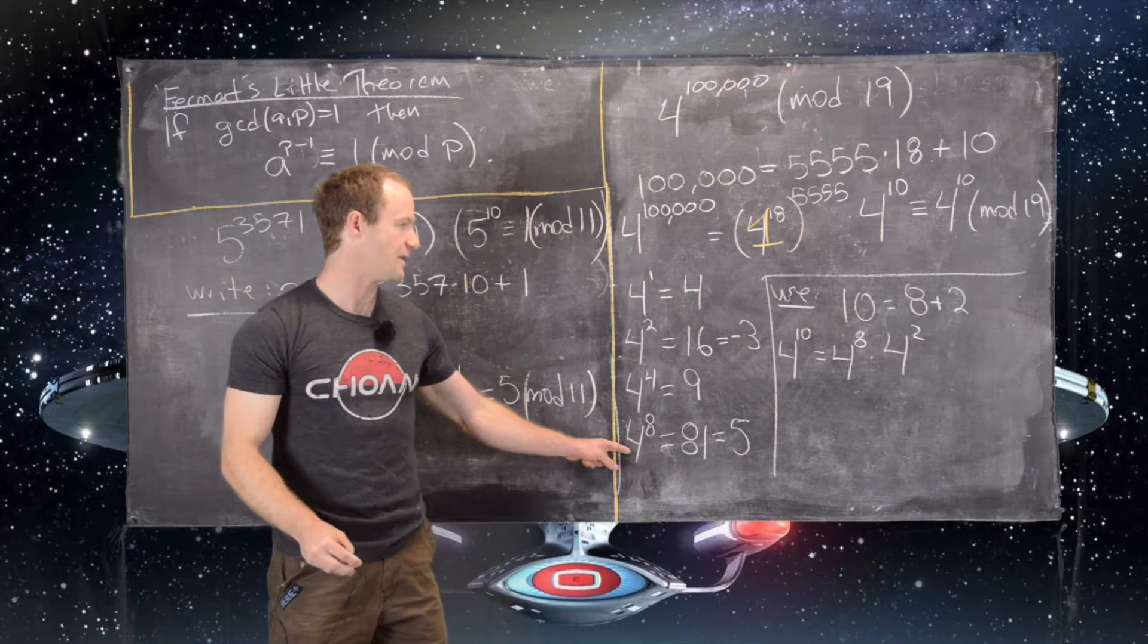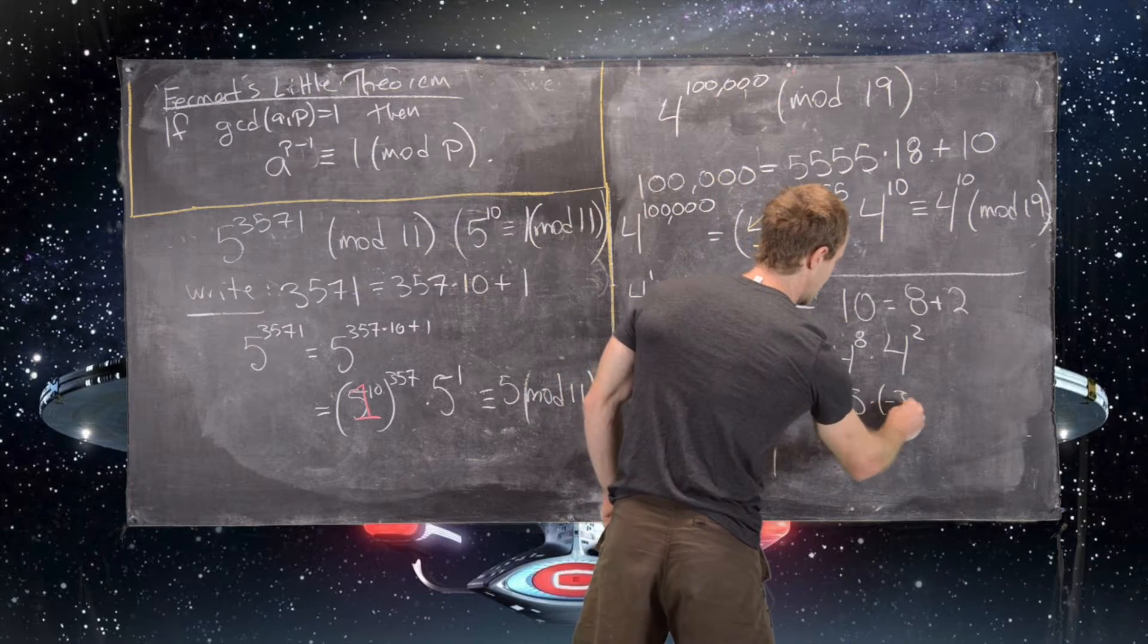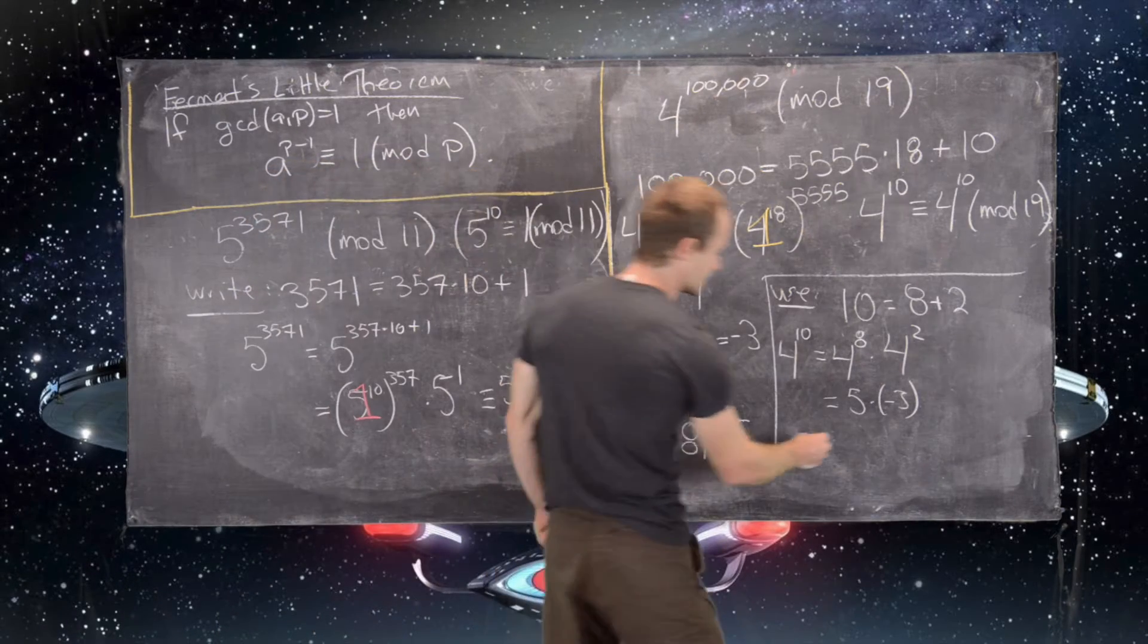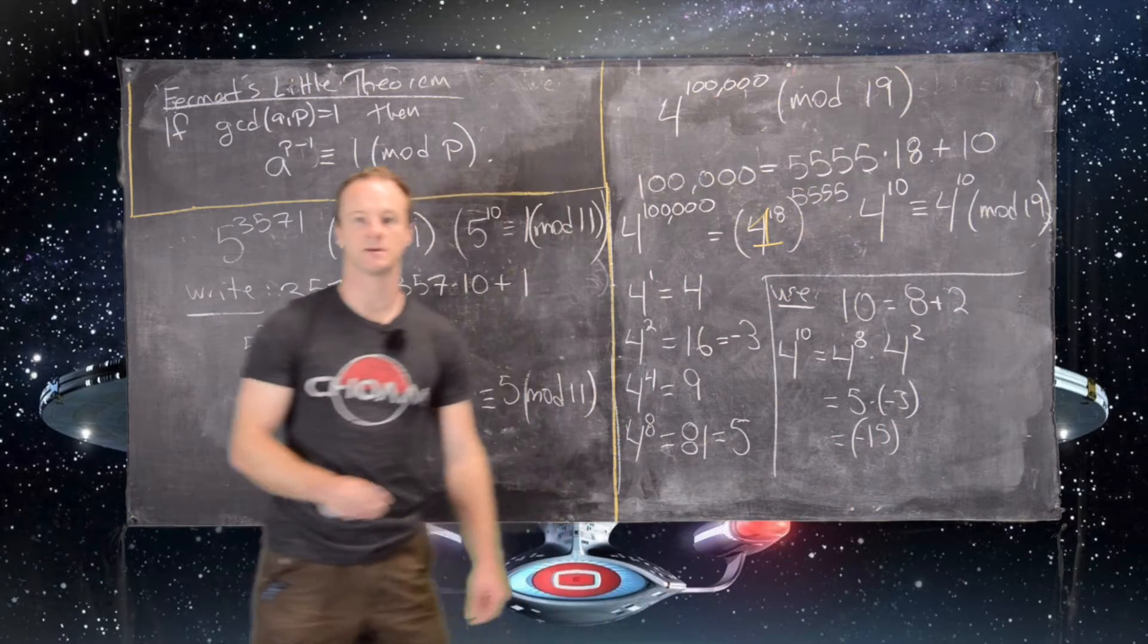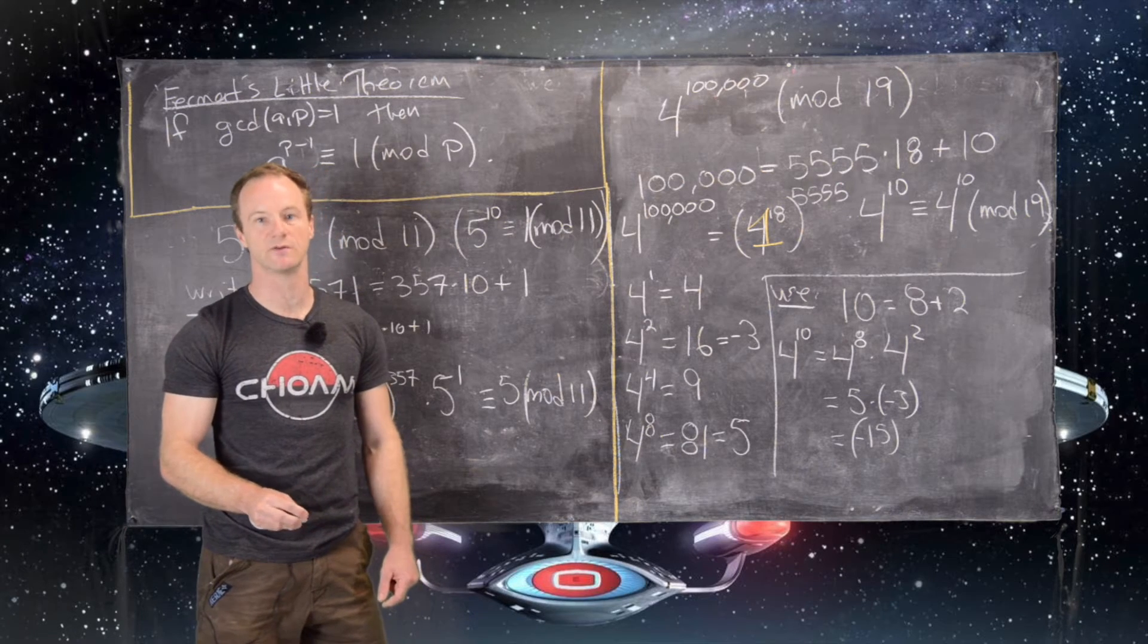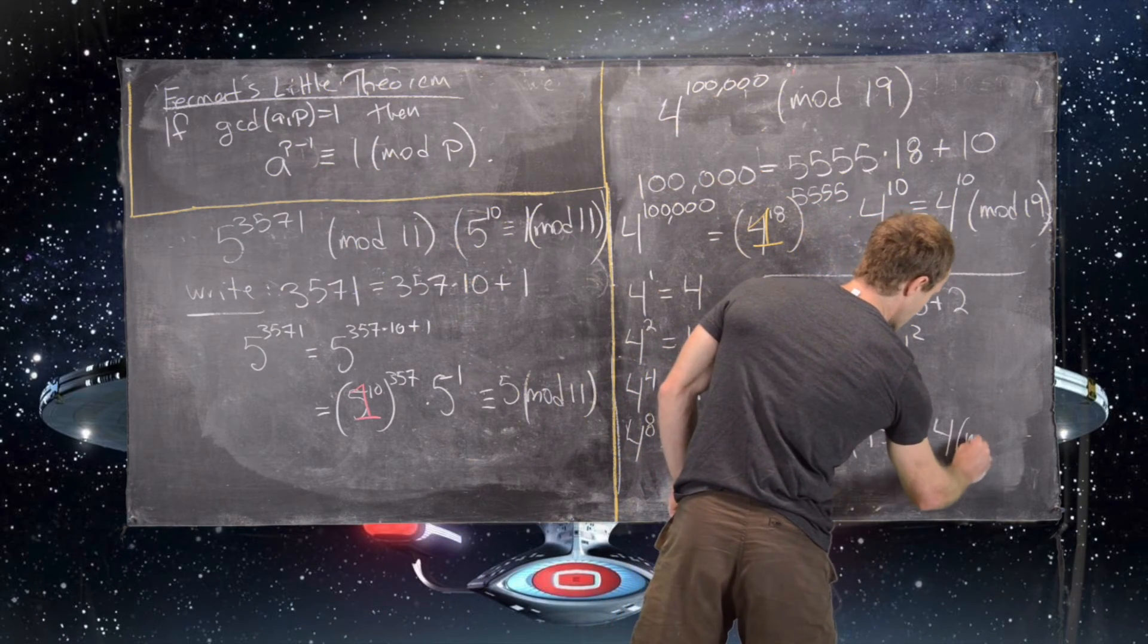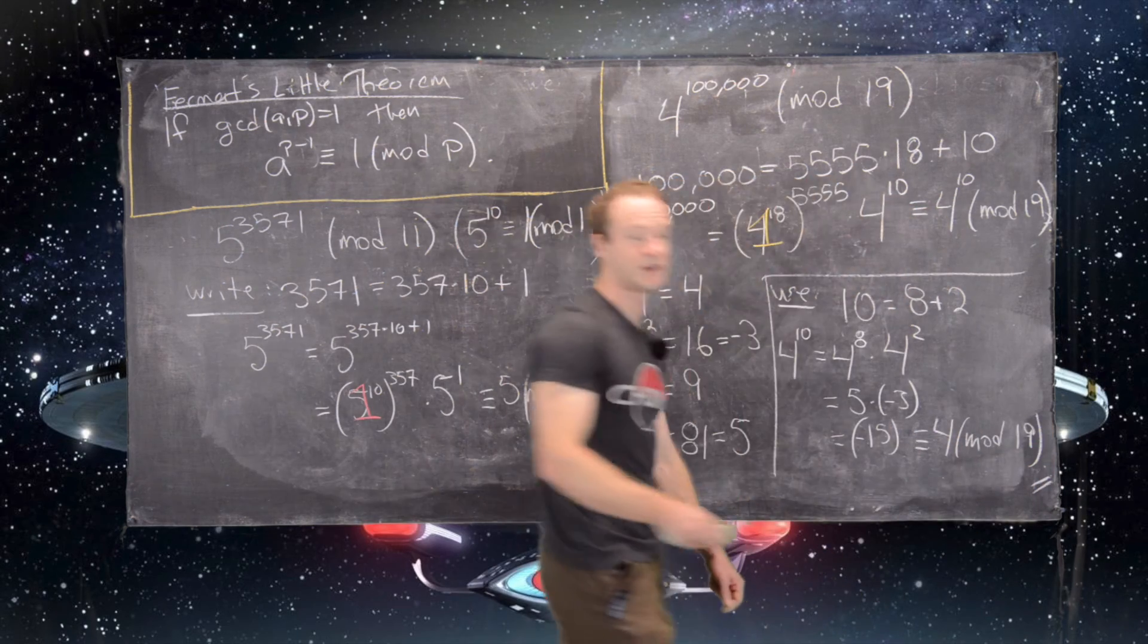But now that will be equal to 5 times negative 3 mod 19. And so 5 times negative 3 is negative 15 mod 19. But now we'd like to put that as a number between 0 and 18, so we can add 19 to negative 15. And now notice that is congruent to 4 mod 19. And that finishes this example.